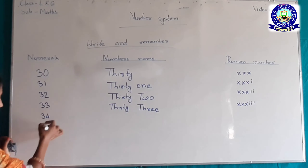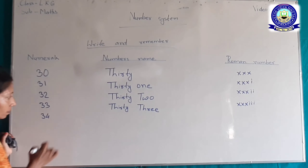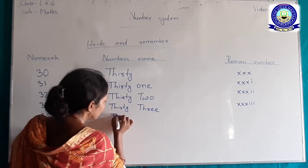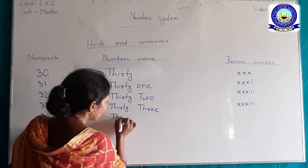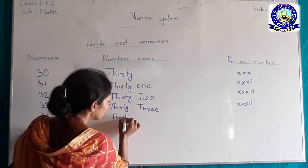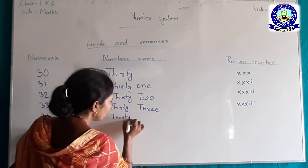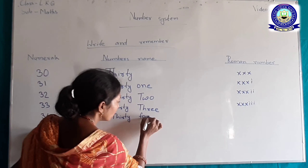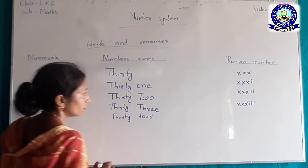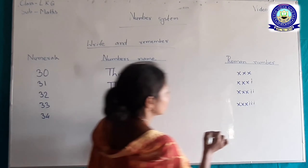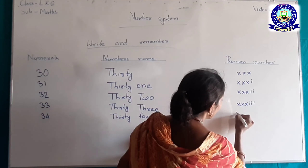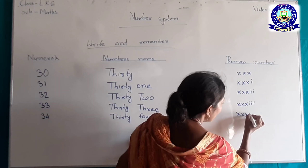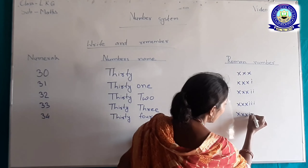34, 34। 34 का word में लिखेंगे: T-H-I-R-T-Y F-O-U-R। 34 का Roman number: Triple X, IV — मतलब XXXIV।